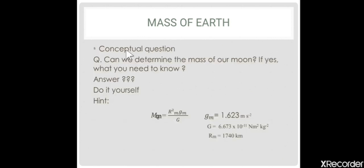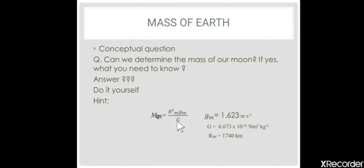Conceptual question: Can we determine the mass of our Moon? If yes, what do you need to know? Do it yourself. The formula used to find the mass of the Moon is: MM = rM² × gM / G, where MM is the mass of the Moon, rM is the radius of the Moon, gM is the acceleration due to gravity on the Moon, and G is the universal constant of gravitation.